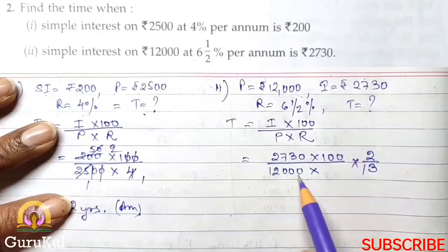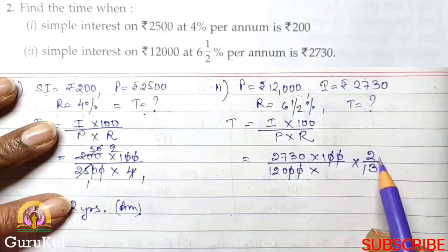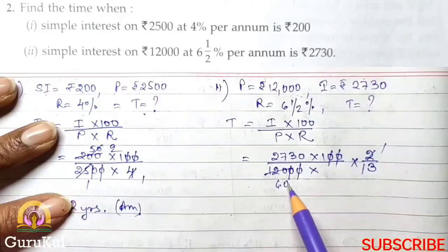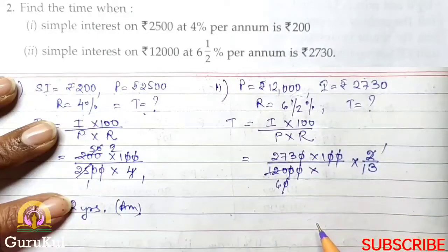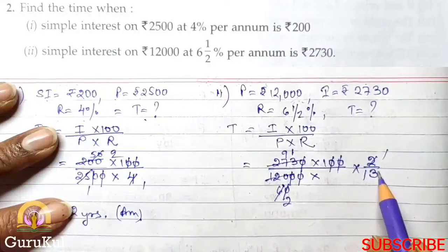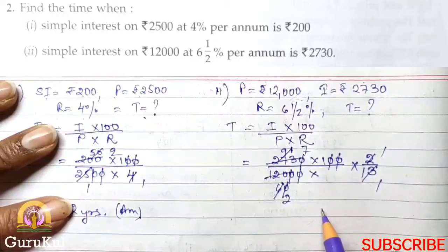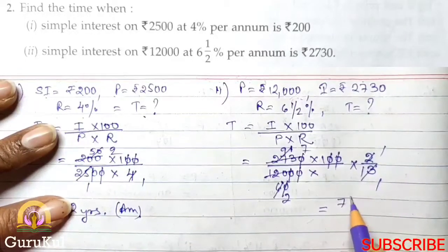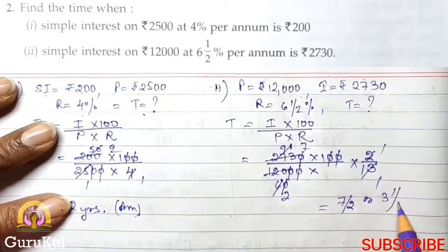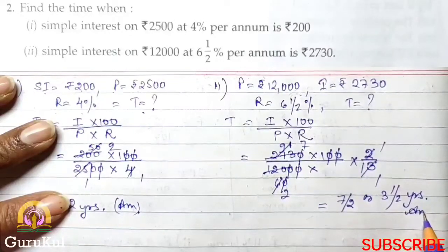Now we evaluate this. 0, 0, 0, 0 got cancelled. 2, 1's are 2, 6, 0. Again this 0 got cancelled. 3, 2's are 3, 9's are 3, 1's are 13, 1's are 13, 7's are. So here our time comes out to be 7 by 2 and 3, 1 and a half years. This is our answer.